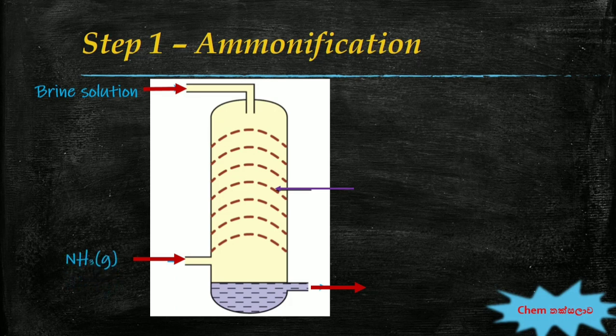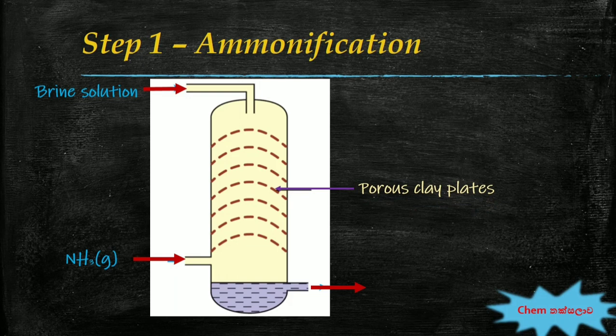The reactants are mixed by sending them in opposite directions — this is referred to as the counter-current principle. Ammonification of sodium chloride is an exothermic process, so the temperature of the brine increases, which decreases the efficiency of dissolving ammonia. It is therefore important to maintain a low temperature in the tower by removing heat through heat exchange. Finally, we obtain a brine solution saturated with ammonia.